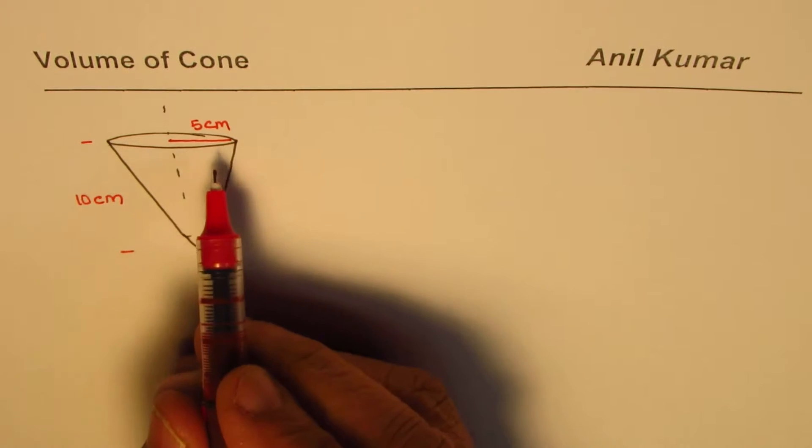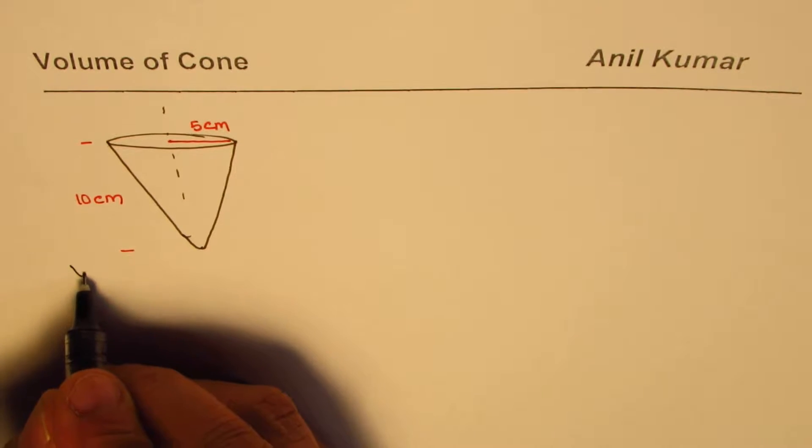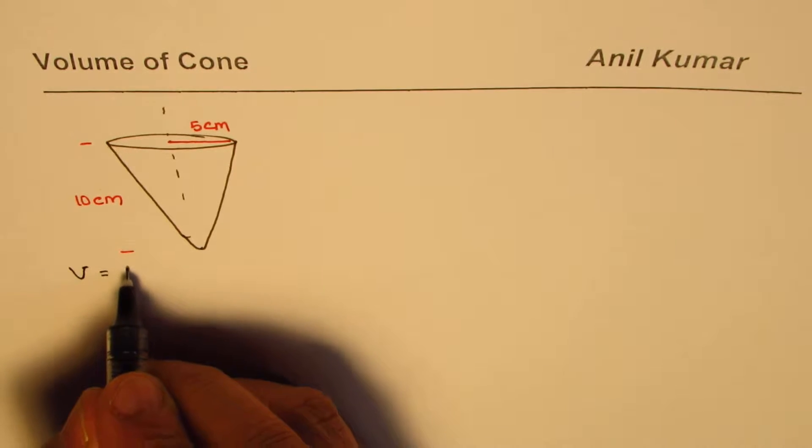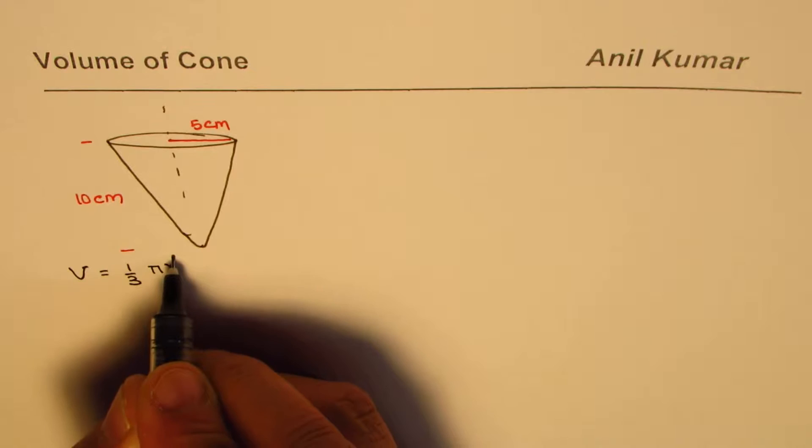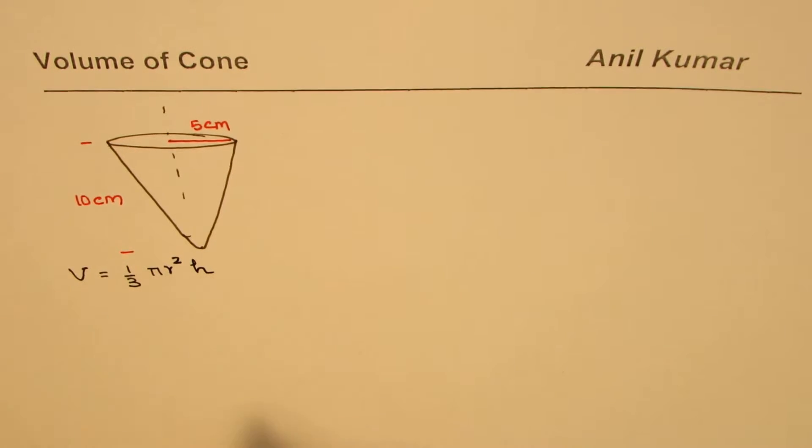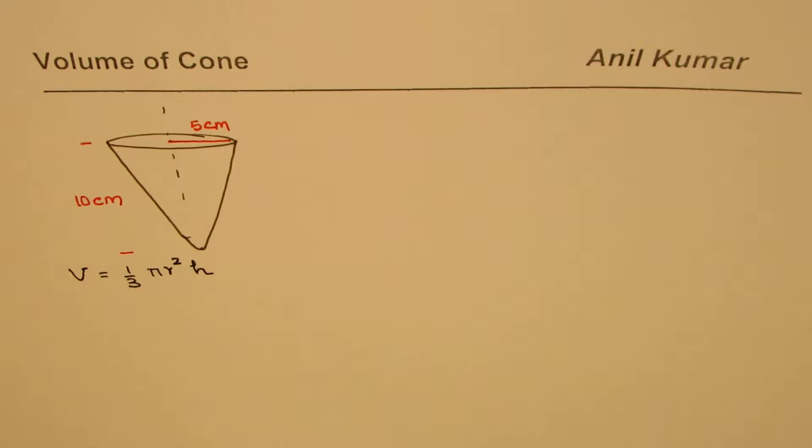We have a cone with radius of 5 centimeters and height of 10 centimeters. We need to find the volume of this cone. The formula for volume is volume equals one third of pi r square h. You can always apply the formula, calculate and get the answer. We'll also consider another cone which is filled with ice cream.